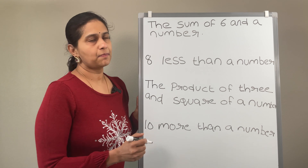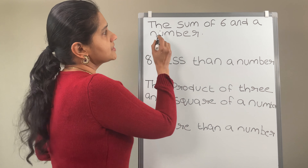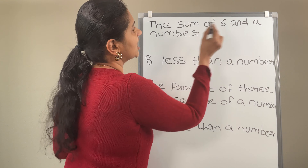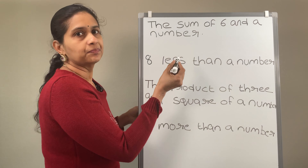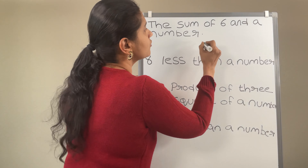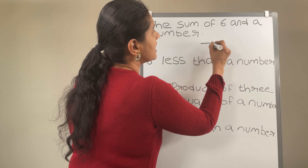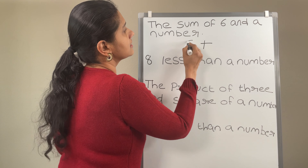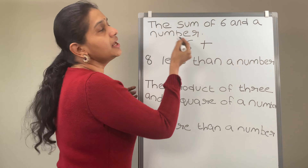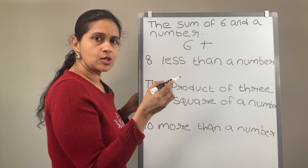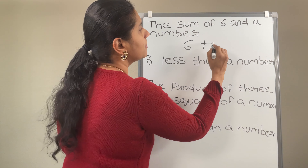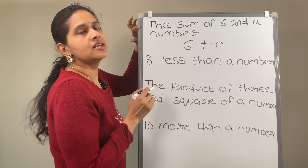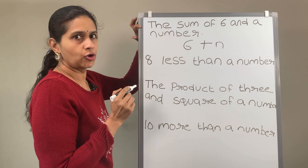Consider these examples. The sum of 6 and a number. So we are going to add something — the sum of 6 and a number. Let us assume n is the number. So 6 plus n is the solution for this.